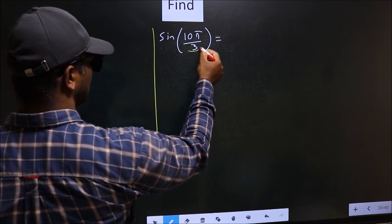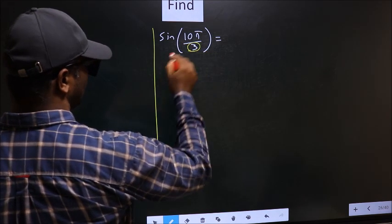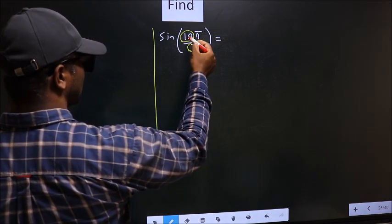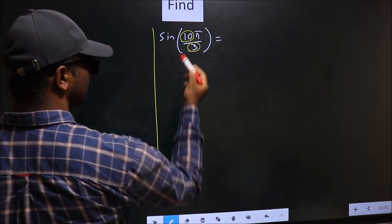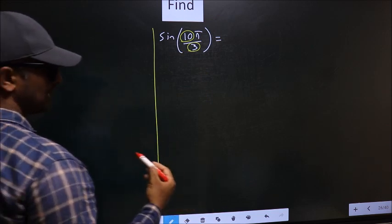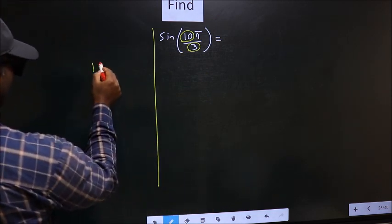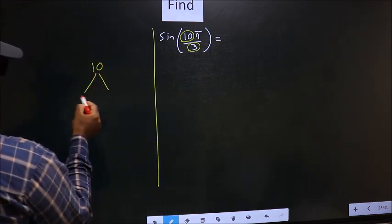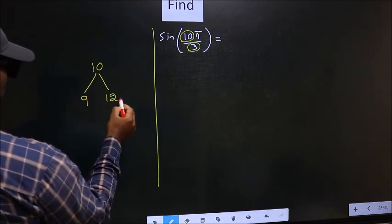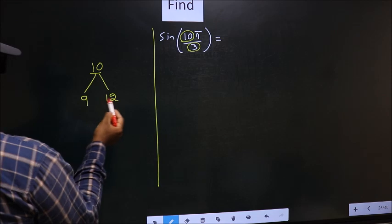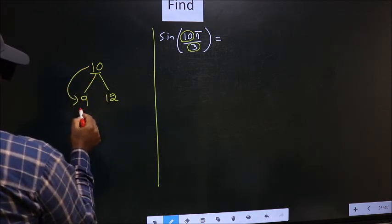In the denominator we have 3. In the numerator we have 10. Now you should look, 10 is close to which multiple of 3. What I mean is, 10 and here you should write multiples of 3: 9 and 12. So 10 is close to which multiple? It is close to 9.